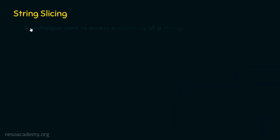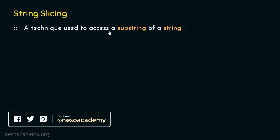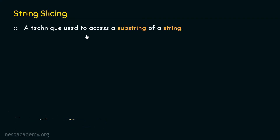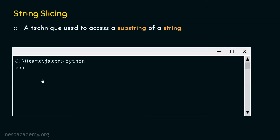String slicing is a technique used to access a substring of a string. If we are interested in accessing a substring of a string, we can do that with the help of this technique called string slicing. In order to understand this concept better, we need to consider one simple example. For that, we need to open our command prompt and activate the Python interactive shell. After activating it, we are now ready to type in the commands.